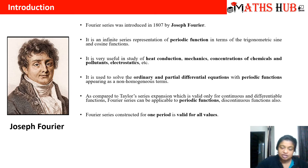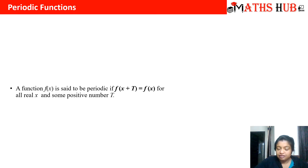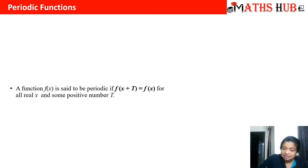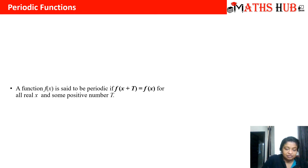The first and most important thing in Fourier series is the periodic function. A function f(x) is said to be periodic if it satisfies the condition f(x + t) = f(x) for all real x and for some positive number t. If I add t to x, I get back the same function. This t is called the period of the function, and such a function is called a periodic function.